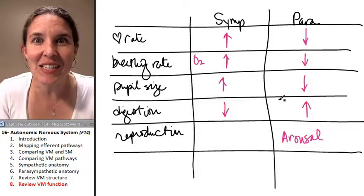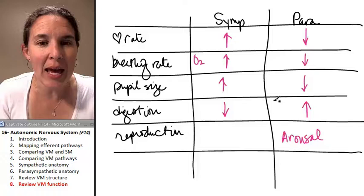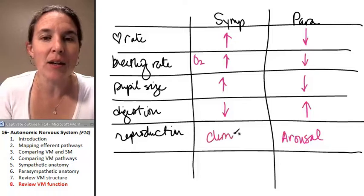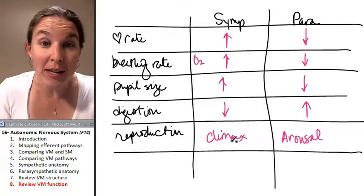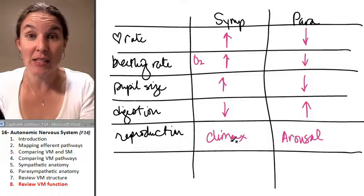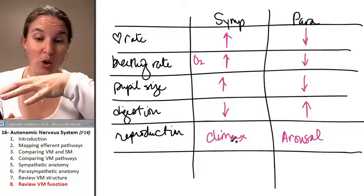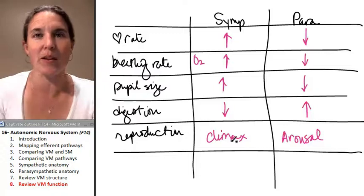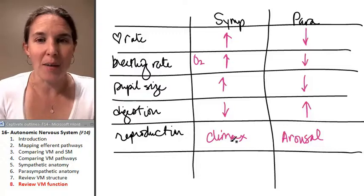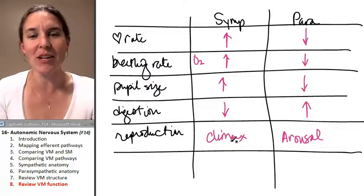The sympathetic nervous system comes into play during climax. So during orgasm, it's the sympathetic nervous system that creates all the physiological things that happen at that point in the game. How cool is that? So you actually need both.